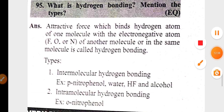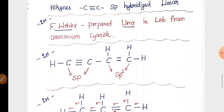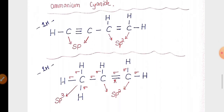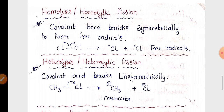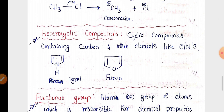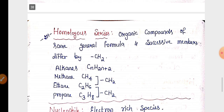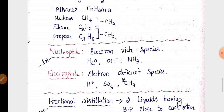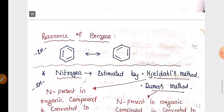From organic chemistry, there is only one chapter: some basic principles and techniques of organic chemistry. From this chapter, questions will be asked on hybridization of carbon in alkanes, alkenes, and alkynes, along with their structures. The first organic compound prepared by Friedrich Wöhler is urea. You'll be given a compound and asked to identify hybridization and the number of sigma and pi bonds. Definitions of homolysis, heterolysis, heterocyclic compounds, and functional groups with examples are two-mark questions. Homologous series definition, nucleophile and electrophile definitions, fractional distillation, R_f factor formula, and application of chromatography are also very important.